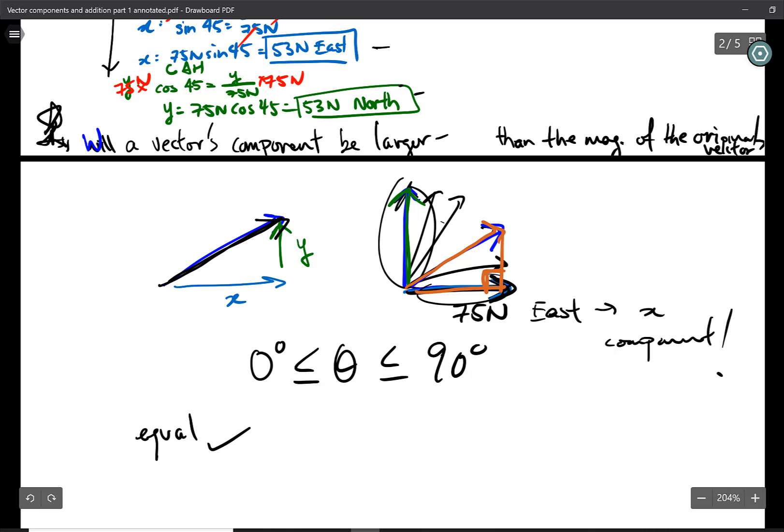We got a right side triangle and we have the original vector. Keep in mind, that's our hypotenuse, right, of our right triangle. We have our adjacent side, the opposite side relative to this angle over here. Now here's the thing about your right triangle.